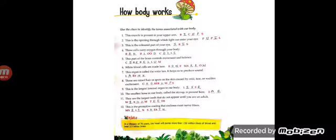Sixth, white blood cells are made here. Where are the white blood cells made? They are made in bone marrow, B-O-N-E M-A-R-R-O-W.